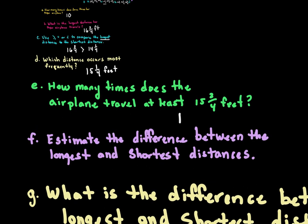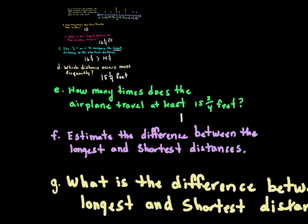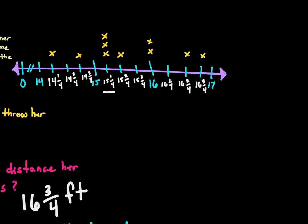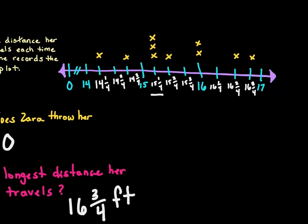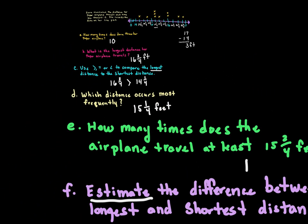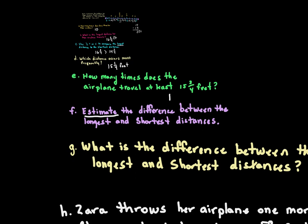Estimate the difference between the longest and the shortest distance. The longest is 16 and three-fourths and the shortest is 14 and one-fourth. To estimate, we say 17 minus 14, which gives us around three feet, since we round one up and one down. So the estimated difference is about three feet.